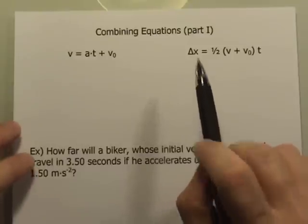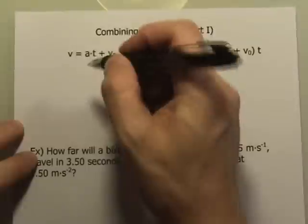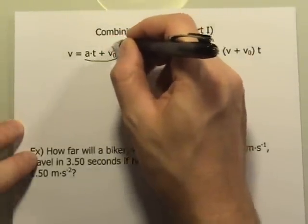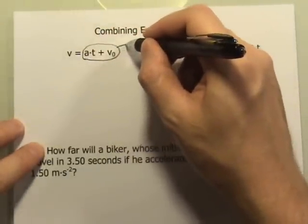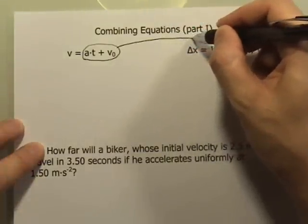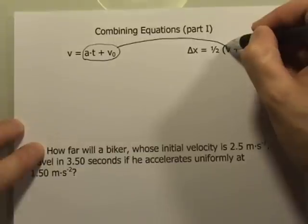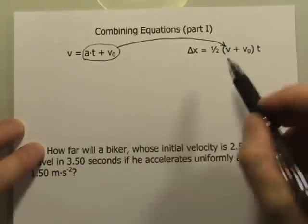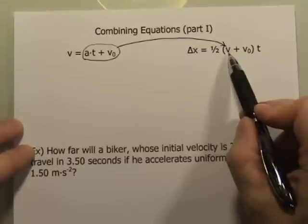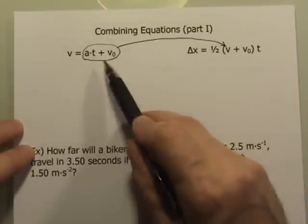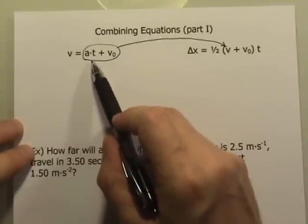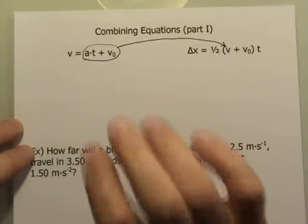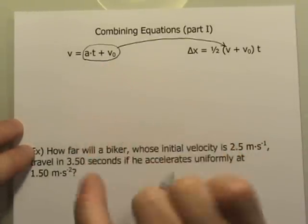What we're going to eliminate this time is v. In order to do that, I'm going to take that expression, which is the equivalent of v, and replace the v in this equation with this variation of v: at plus v-naught. That's going to give me a third equation which I will be able to use.